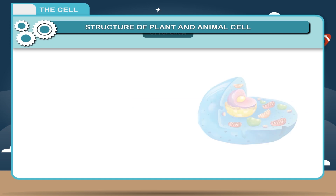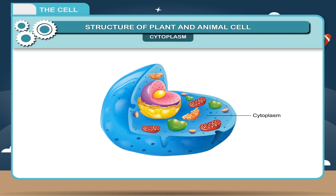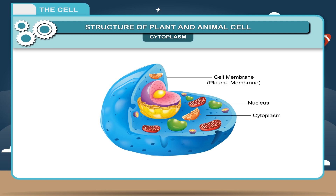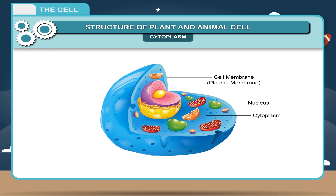Cytoplasm. It is the part of the protoplasm present between the plasma membrane and nucleus. It is a colorless and transparent fluid inside the cell membrane. All the vital functions of life take place in the cytoplasm.